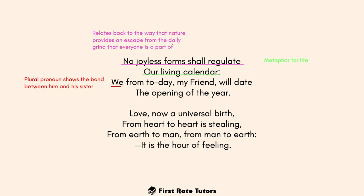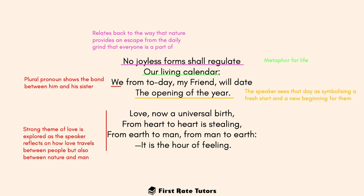The phrase 'no joyless forms to regulate our living calendar' relates to how nature offers an escape from the daily grind and mundanity everyone is tied into. 'Our living calendar' is a metaphor for life. The plural pronoun 'we' shows the bond between the speaker and his sister — contextually, Wordsworth's close relationship with Dorothy. The reference to 'the opening of the year' shows the speaker sees that particular day as symbolizing a fresh start and new beginning. Love is then described as a 'universal birth,' where hyperbole in 'universal' reflects love as a cycle everyone should participate in.